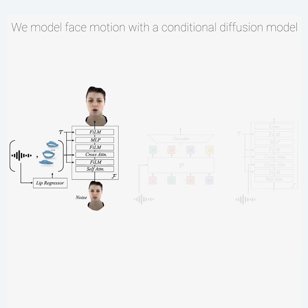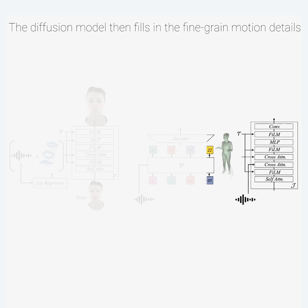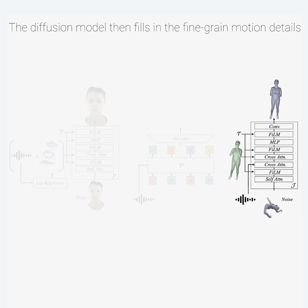Our diffusion motion model outputs facial expression codes that can be used to reconstruct a full facial mesh. For the body, we introduce a guide pose predictor network. The transformer-based VQ network takes audio as input and auto-regressively outputs poses at one FPS. We then use this as extra conditioning to a diffusion network that infills higher-frequency details of the motion. Using the combined VQ and diffusion network allows us to produce significantly more diverse and peaky motion compared to using one or the other.